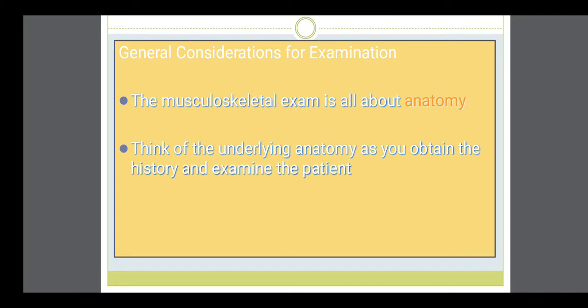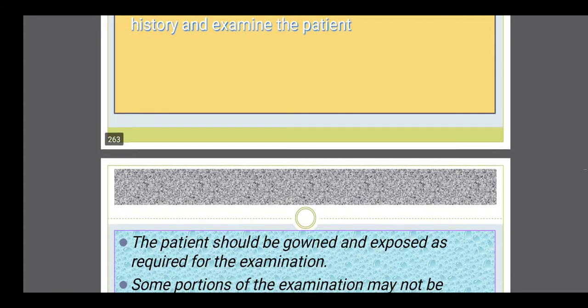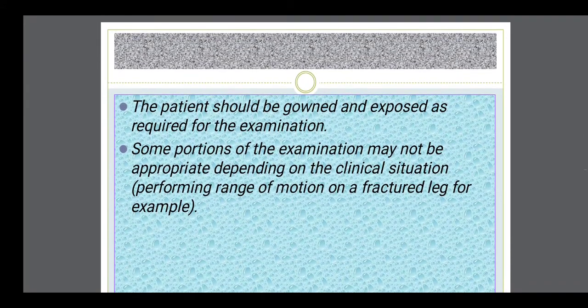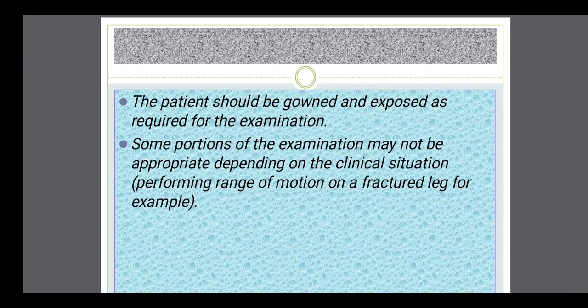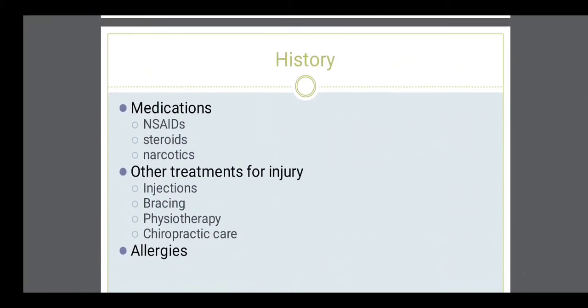When you are doing the examination, the musculoskeletal system is all about the anatomy — you have to remember the anatomy. Appropriate gowning, proper exposure, and unnecessary undue exposure should be avoided. The subjective data related to the examination will include asking the patient about pain, medication history, and the injury and treatment they have taken due to injury.